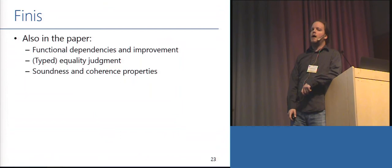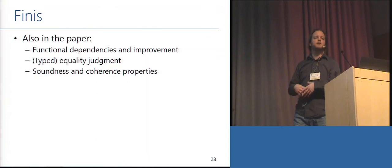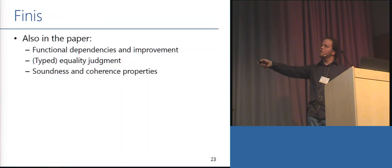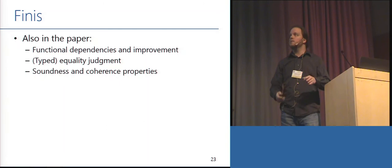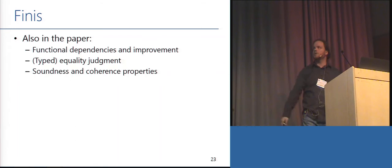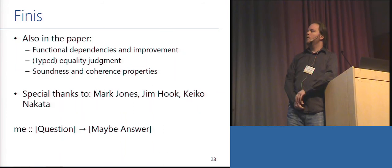I started by talking about functional dependencies, and some may have noticed their absence in the second half. The good news is the model for functional dependencies is exactly the same as the model for anything else — we don't extend the model at all. In the paper I give a type rule that allows you to use functional dependencies to swap types around, and show the semantics preserves all expected type equalities and term equalities. There's a judgmental presentation of equality with soundness and coherence properties. Special thanks to my advisor Mark Jones, Jim Hook who's responsible for the identity example, and Keiko and Kata. I'm happy to turn your questions into answers.